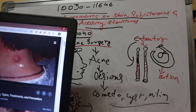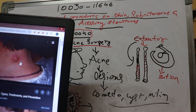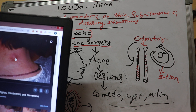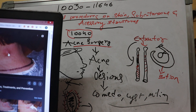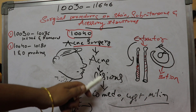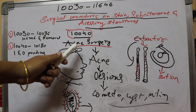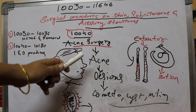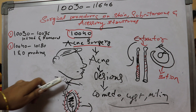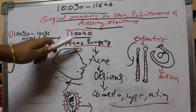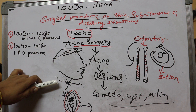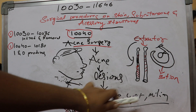This is a cyst — it is the abnormal growth of dead cells which contains fluid. Similarly, we also have milia. All of these are nothing but lesions of the skin. Since this is an integumentary procedure, it includes procedures done on the skin, and this is a surgical procedure on the skin.